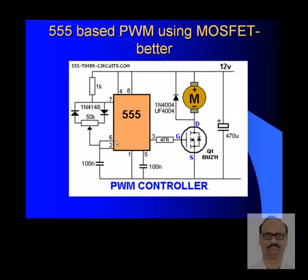The 555-based PWM using a MOSFET is better. The advantage of the MOSFET is that it uses the voltage available from the 555 rather than current, so the power loss in the active area is much less compared to the transistor. In the corrected circuit, charging takes place by one route and discharging by another. This is how the duty cycle of the pulse width modulation can be easily managed while keeping the frequency the same, controlling the motor speed via the wiper.